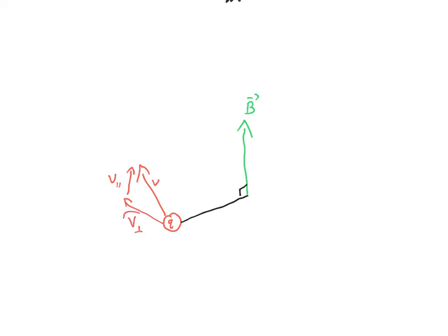v perpendicular is the one that will determine the rate of circling, how fast the thing is going to go in a circle. But as the particle gets pulled around by the magnetic field, if I try and draw the path,